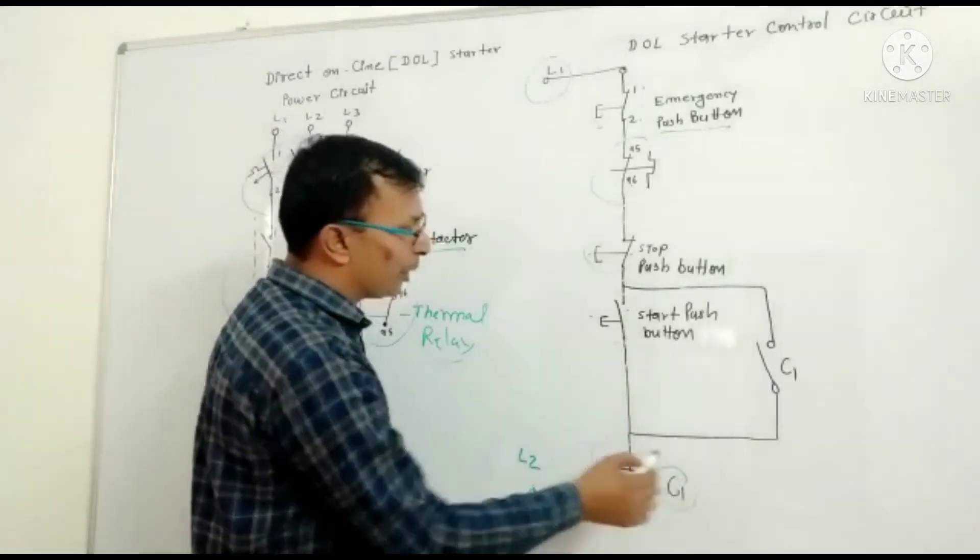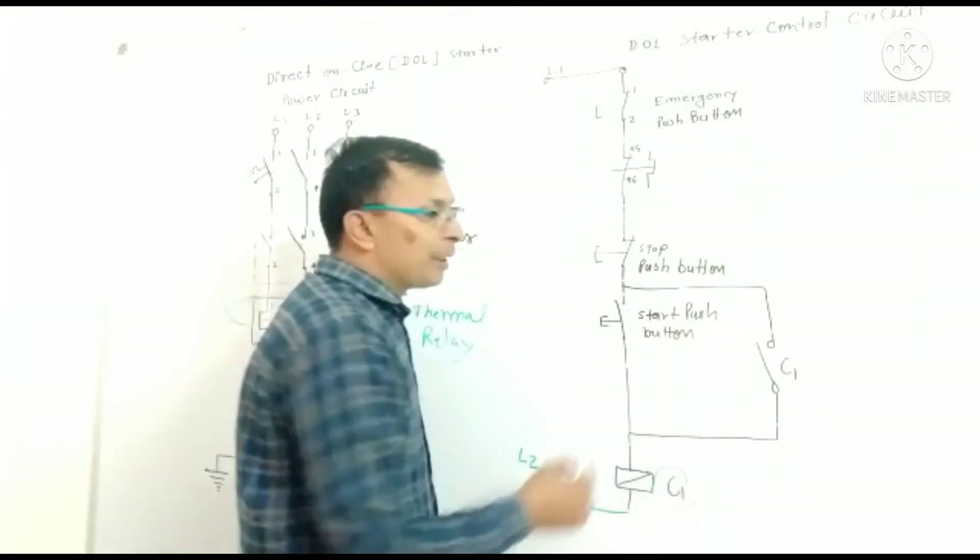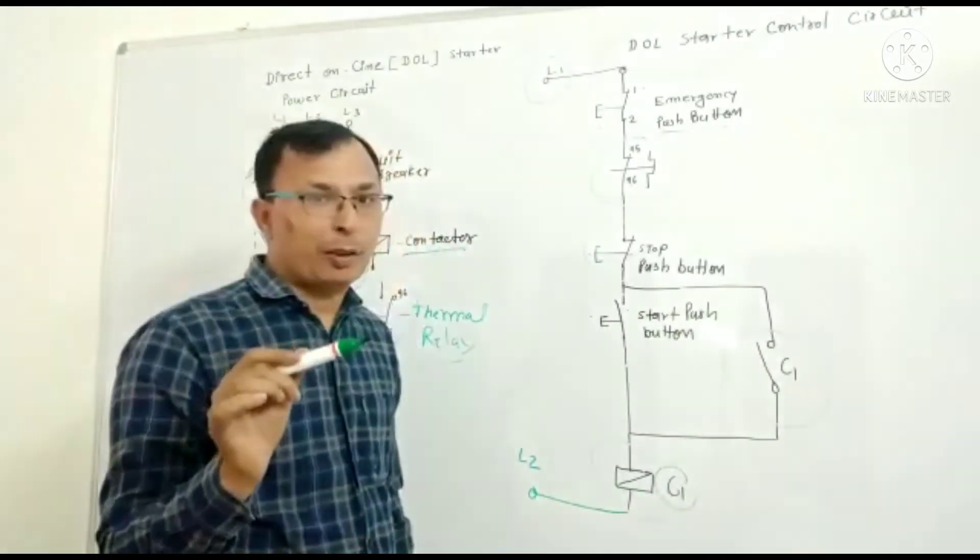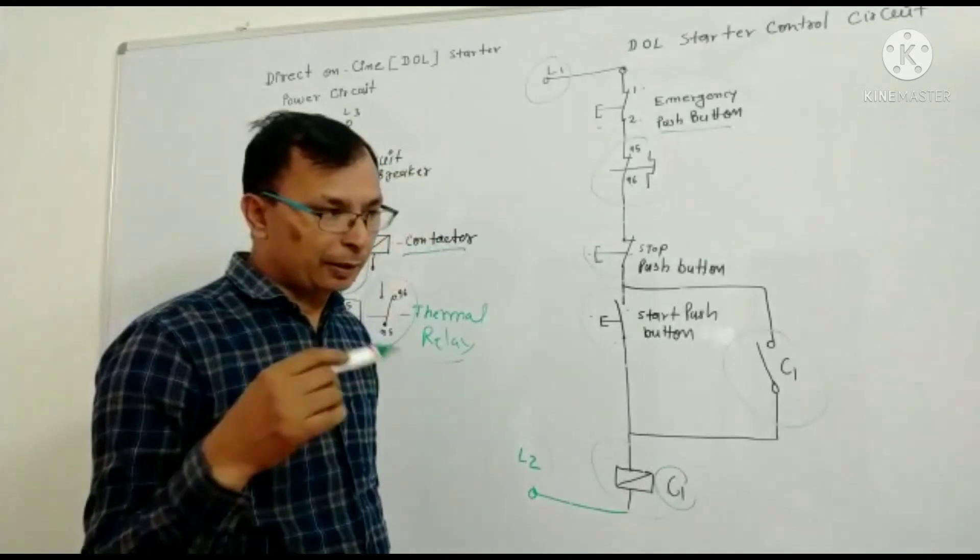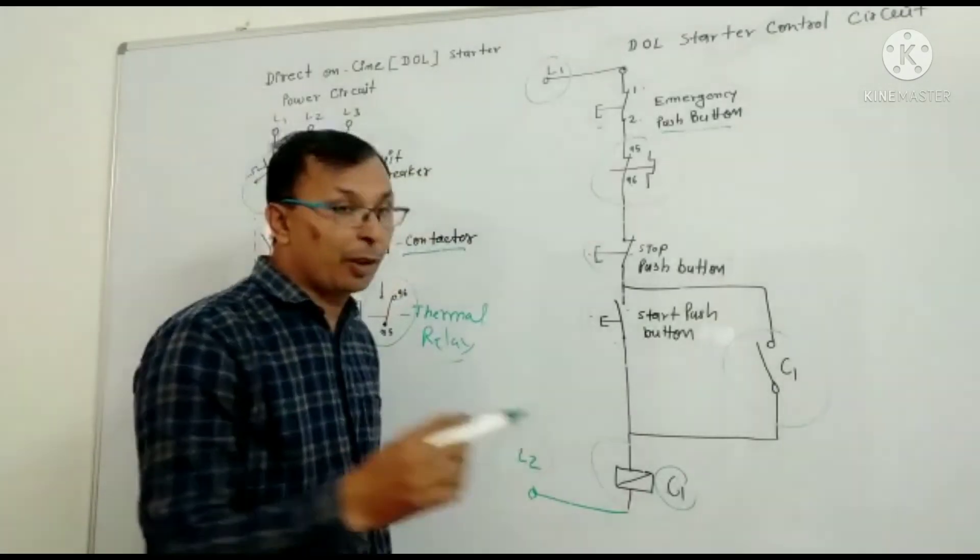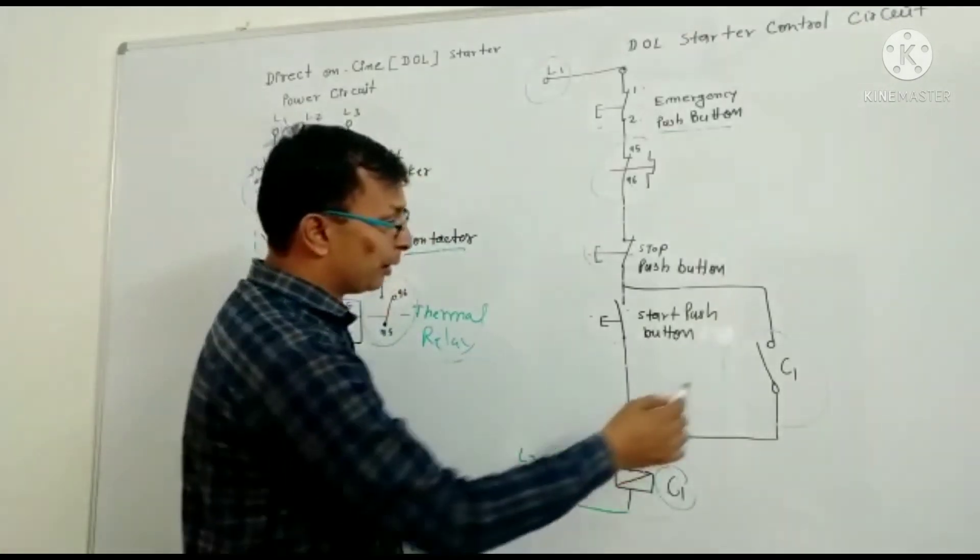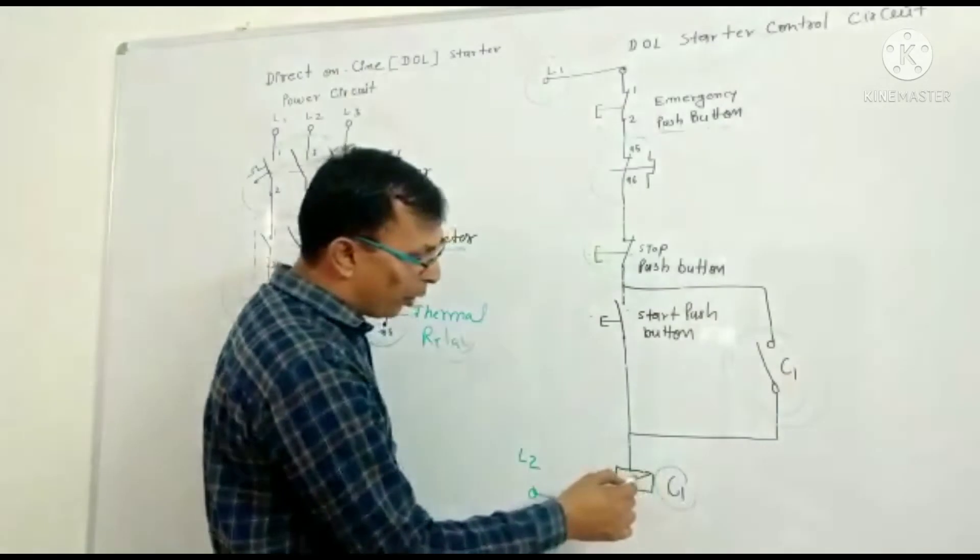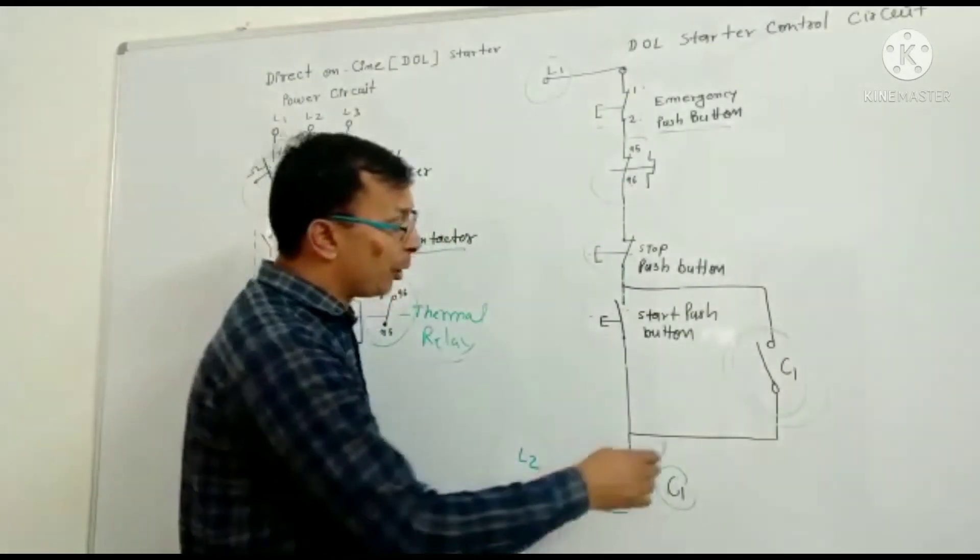This is the contactor C1, and this is the holding of the contactor or latching of the contactor. This is the enrollment of this contactor due to this.